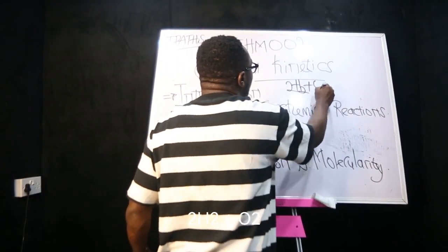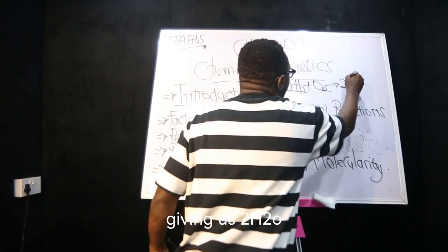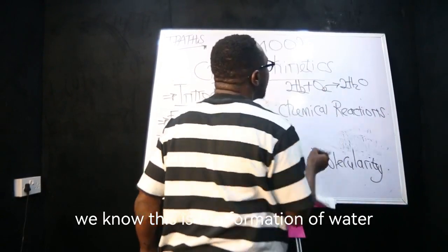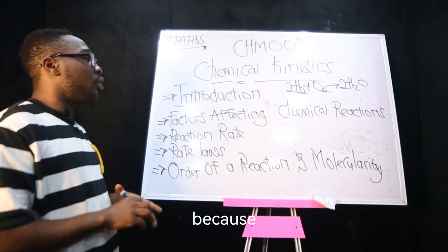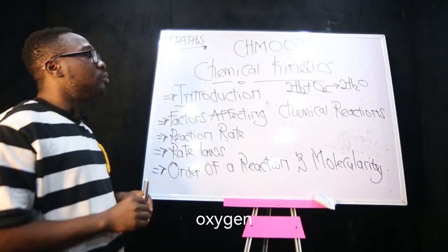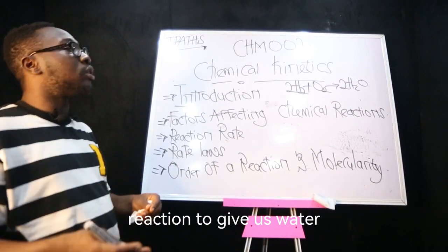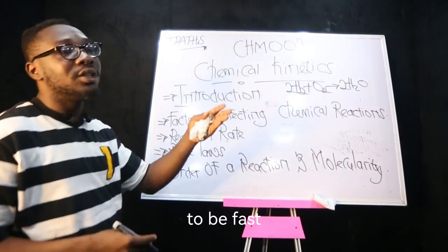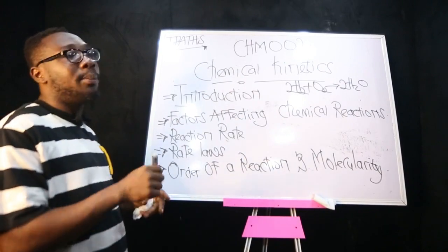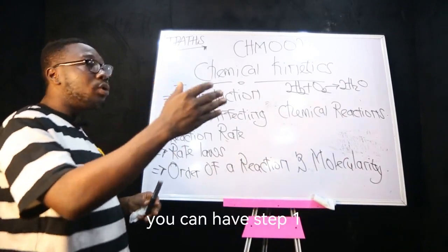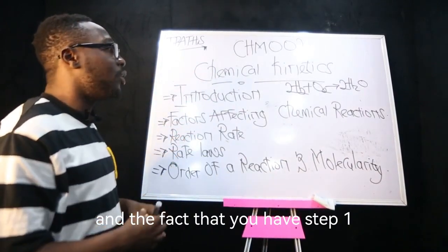What I mean by elucidation of mechanism: if you have a reaction 2H2 plus O2 giving us 2H2O, we know this is the formation of water. Water does not just form like this - hydrogen and oxygen reacting to give us water. We need to consider the fact that this reaction is a stepwise reaction, with step one and step two, and this leads to elucidation of mechanism of chemical reactions.